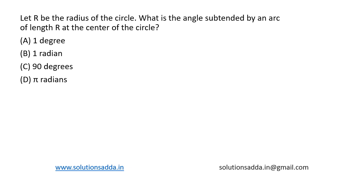This is a question from engineering mathematics. Let r be the radius of the circle. What is the angle subtended by an arc of length r at the center of the circle? Radian describes the plane angle subtended by a circular arc as the length of the arc divided by the radius of the arc. One radian is the angle subtended at the center of a circle by an arc that is equal to the length of the radius.